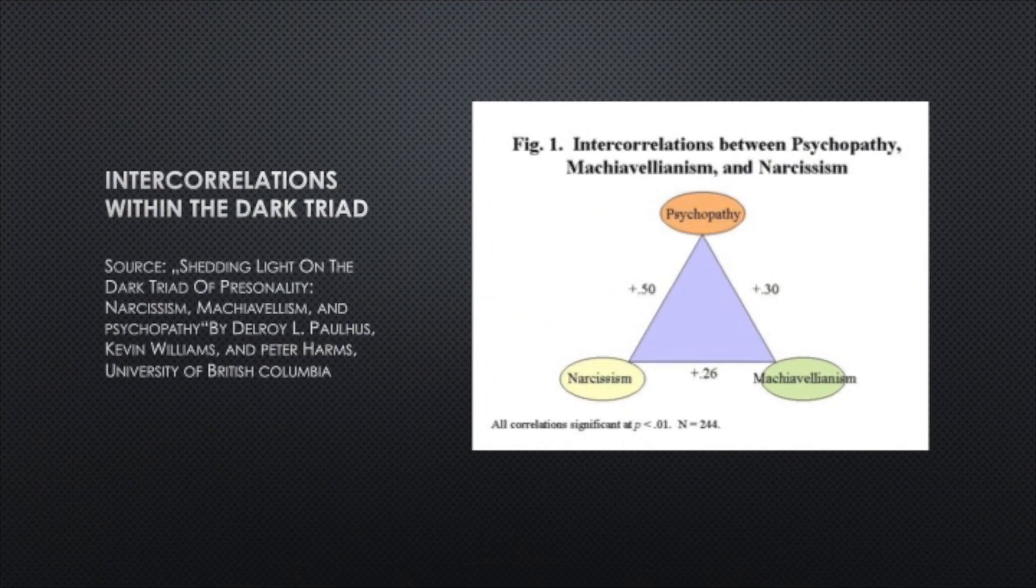There are also inter-correlations within the dark triad. If we have a look at this map, we can see that the highest inter-correlation of 0.5 positive is between narcissism and psychopathy. As mentioned earlier, I will do another video about this particular research on the relationship between psychopathy and narcissism. All three inter-correlations are positive. The strongest one is though between narcissism and psychopathy. There is also one between psychopathy and Machiavellianism. It doesn't necessarily mean though that every psychopath is also a Machiavellist.